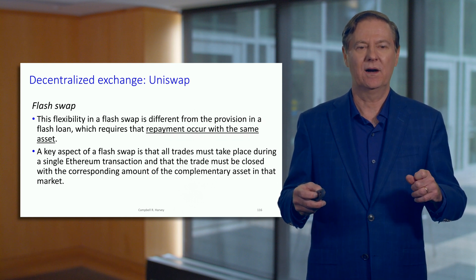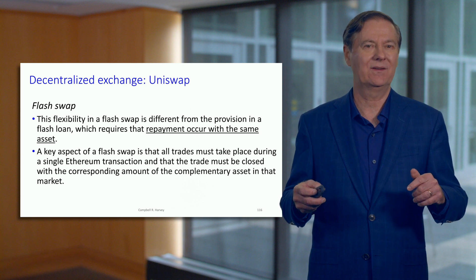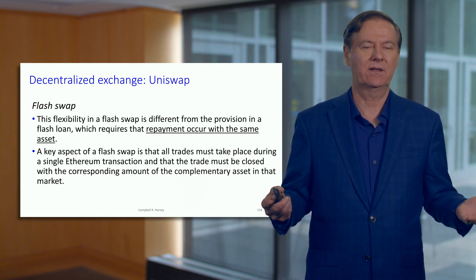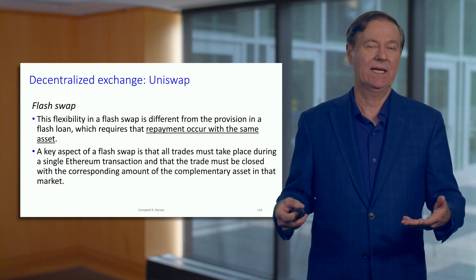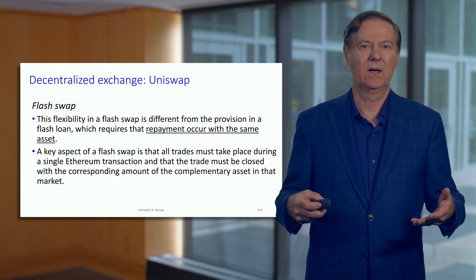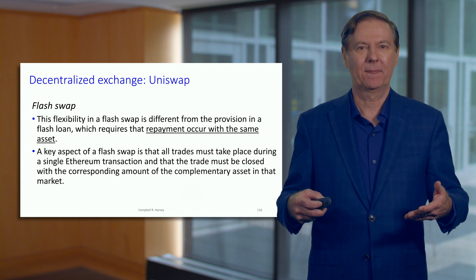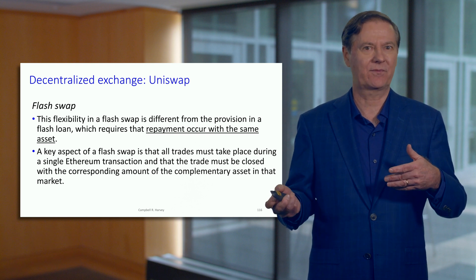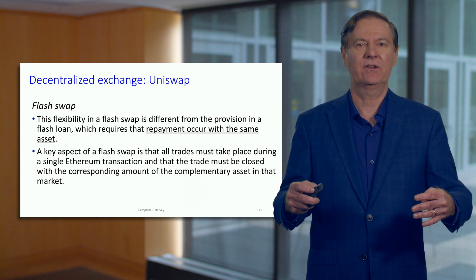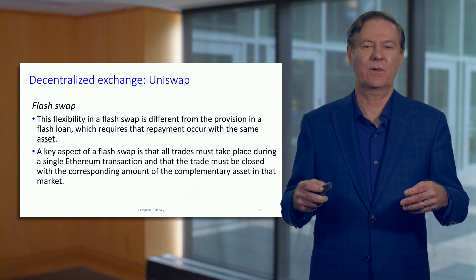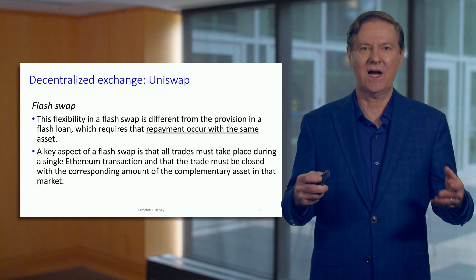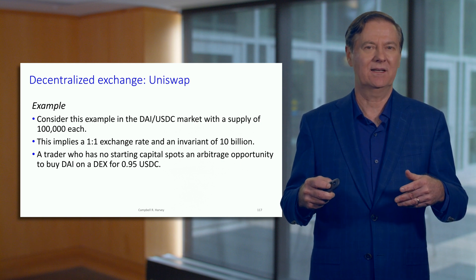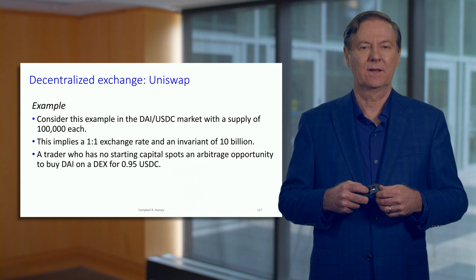So let's go through the details and mechanics of a flash swap. This is much different than the flash loan because the loan needs to be repaid in the same asset — so if I borrow 10,000 DAI I need to pay back 10,000 DAI. The swap will be with different assets. Again, it's in a single Ethereum transaction, so it's going to be atomic just like the flash loan, and this is a very interesting idea that happens on Uniswap.